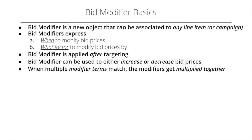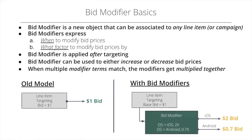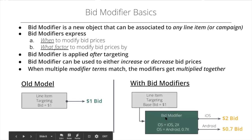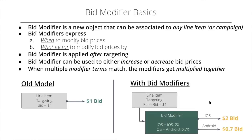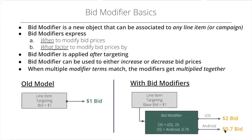In the old model, a single line item had one fixed bid price — say one dollar. With bid modifiers, your bid becomes a base bid used when no modifier matches. The bid modifier has its own modifying terms with different factors. For example, when the auction is iOS, you double the bid; when it's Android, you reduce it.